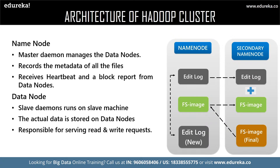Data Nodes are called the slaves of the Name Node and are responsible for storing the actual data and updating the task status and health status to the Name Node in the form of a heartbeat. The Secondary Name Node is not actually a backup of the Name Node — it acts as a buffer which saves the latest updates to the FS image obtained in the intermediate process and finally updates them to the final FS image.